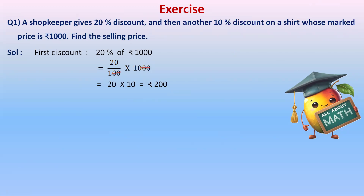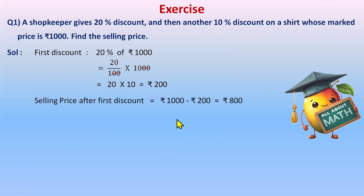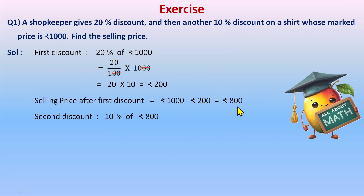The first discount is 200 rupees. Selling price after the first discount: 1000 − 200 = 800 rupees. Now the second discount of 10% will be applied on this reduced price of 800 rupees — not on the original 1000 rupees. So the second discount = 10% of 800 = 10/100 × 800 = 80 rupees.